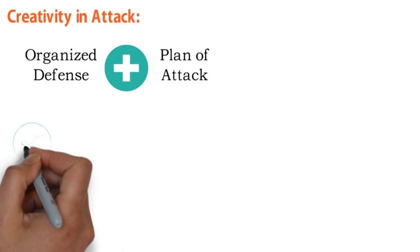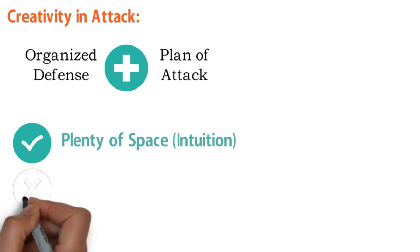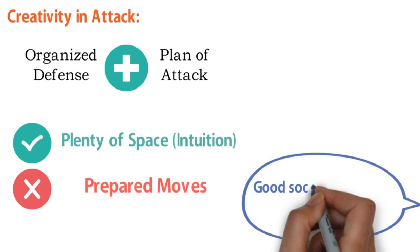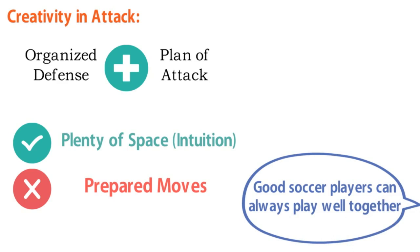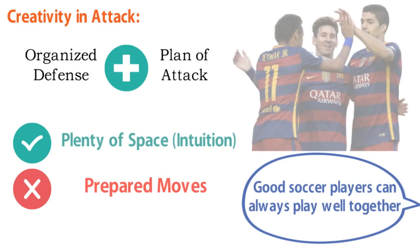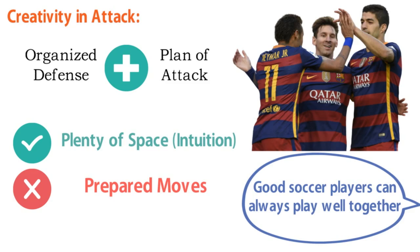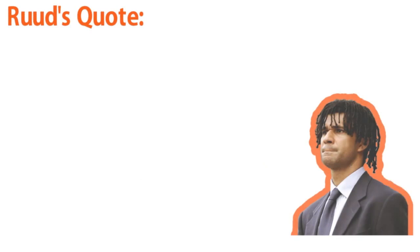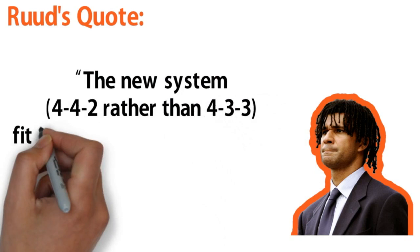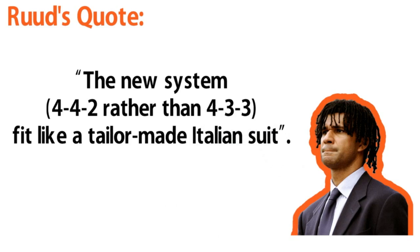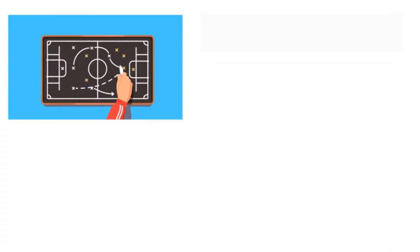In addition to an organized defense, you need a plan of attack. This has to include plenty of space for players to use their intuition, particularly the strikers. You can't rely on prepared moves — everyone knows them. They say that good soccer players can always play well together, but sometimes combination simply doesn't work and the different qualities of various players don't match. At AFC Barcelona, they have at least three amazing players — Messi, Luis Suarez and Neymar — and the way they work together is exceptional. As every video, I will finish with something he said: 'The new system 4-4-2 rather than 4-3-3 fit like a tailor-made Italian suit.' And at the end, it would be great if you read the whole book — it's so impressive.